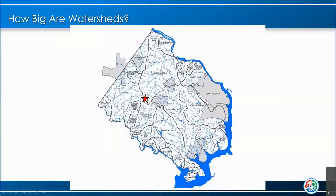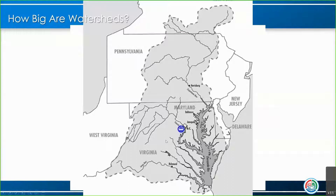Government Center is located in the upper portion of the Difficult Run watershed. This is the outline of Fairfax County — we have 30 major watersheds outlined here. Difficult Run drains into the Potomac River, and we're located up here in the upper portion of that watershed. This is just looking at watersheds at a larger scale.